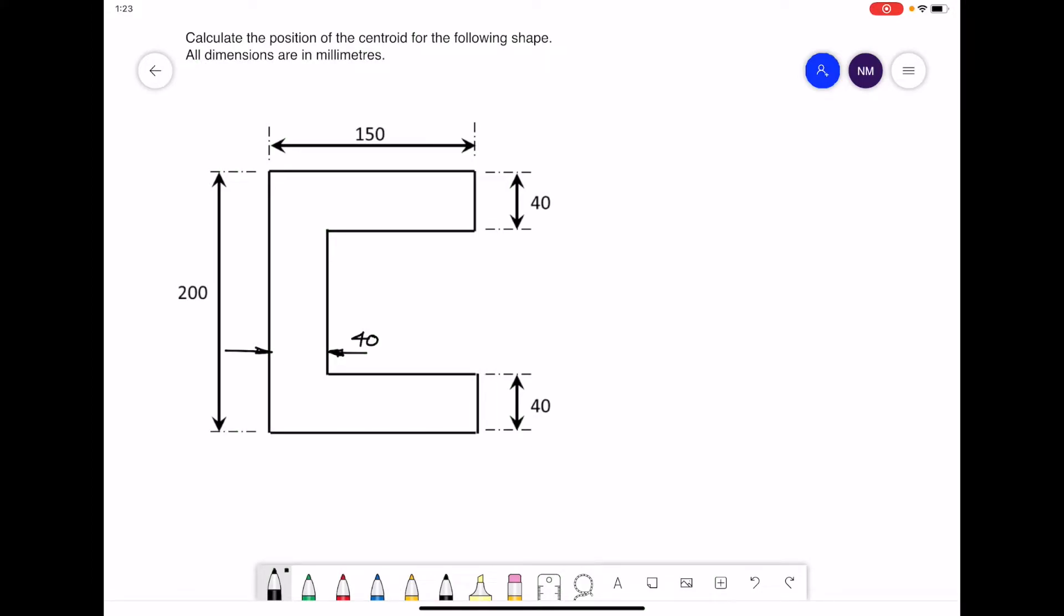In this example, we are going to calculate the position for the centroid for this C section. All dimensions are given in millimeters. The first move is to split our shape up into a number of rectangles. This can be achieved by either doing a horizontal or vertical split. My preference here will be to do a horizontal split to make our three rectangles.